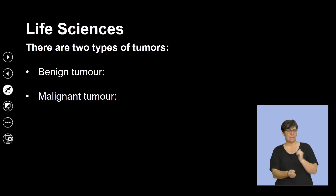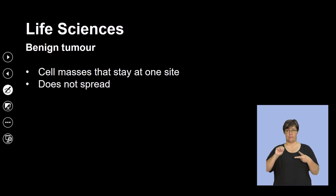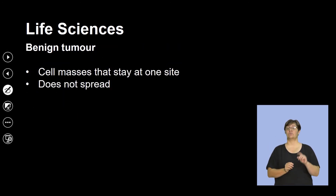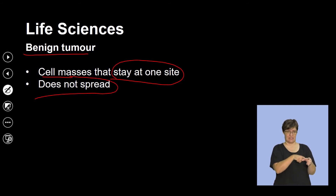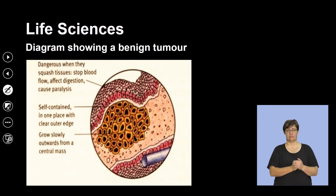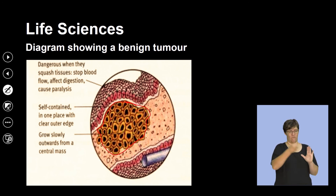There are two major types of tumors that develop: a benign tumor and a malignant tumor. A benign tumor is a cell mass that stays at one site and does not spread — it is localized, meaning it is found in one area. These are generally cells that have continued to grow uncontrollably but can easily be removed and stopped from spreading.